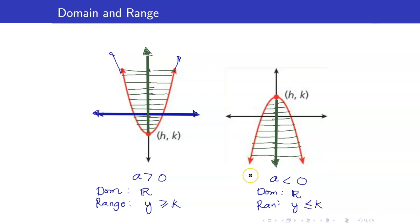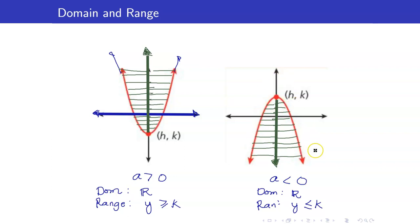To summarize: the range of the graph depends on your vertex and on the sign of a. If a is positive, your range is y such that y is greater than or equal to the y-coordinate of your vertex, because it's opening upwards. But if it's opening downwards, then your range will be less than or equal to the y-coordinate of your vertex.